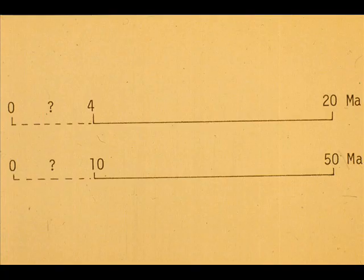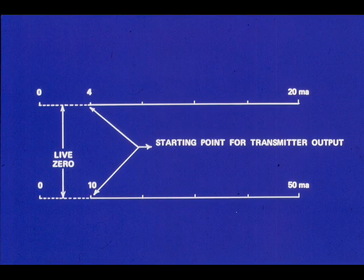Why did the output ranges not start at 0 milliamps instead of 4 or 10 milliamps? The reason is to get a live zero. In this way, if the transmitter output is too low for the low end of the range, the receivers will read below zero.